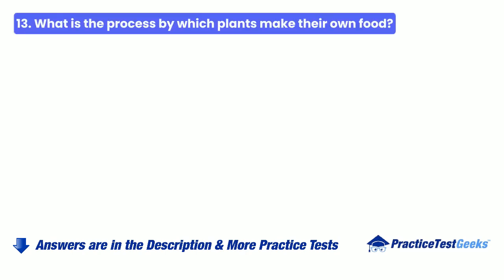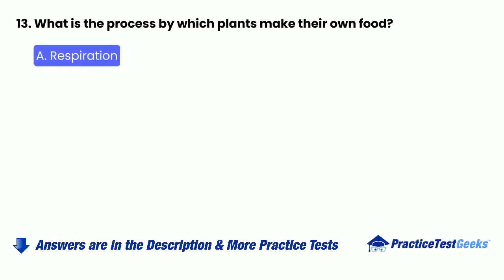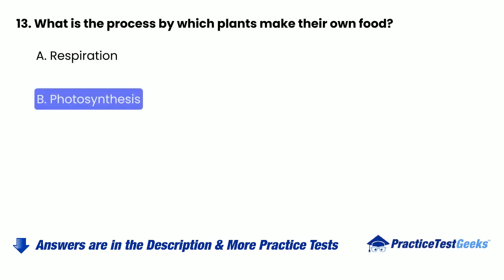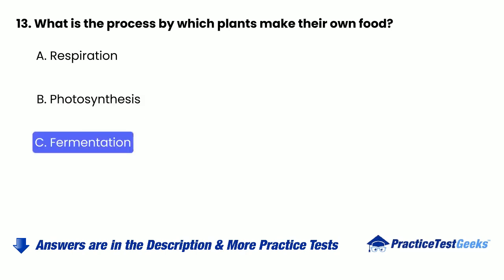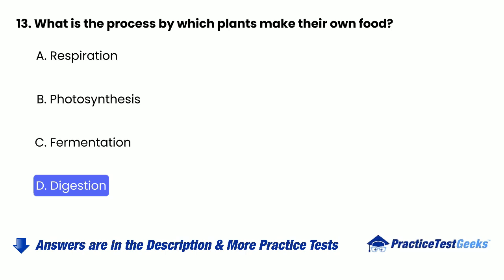Question 13: What is the process by which plants make their own food? A. Respiration. B. Photosynthesis. C. Fermentation. D. Digestion.